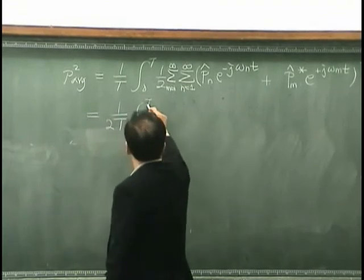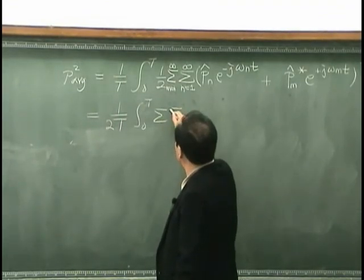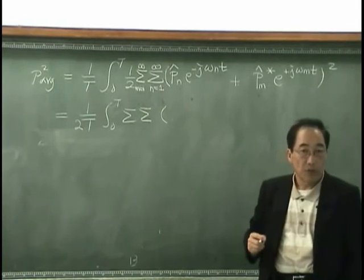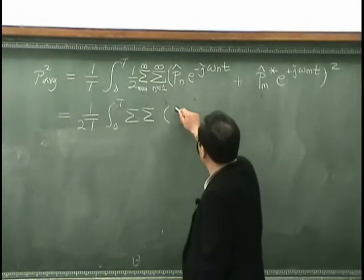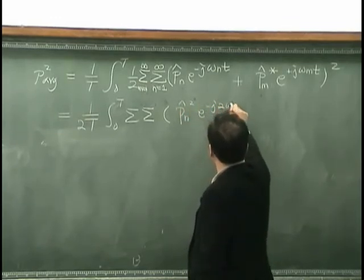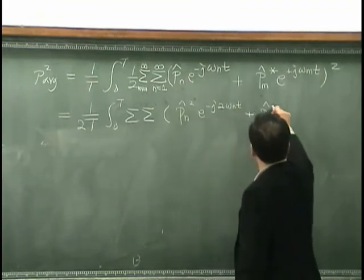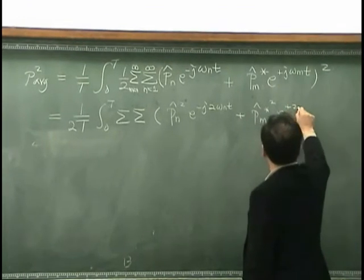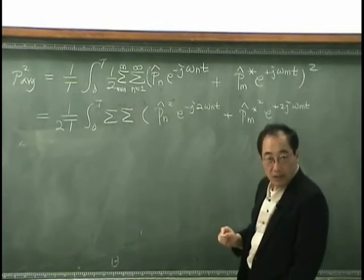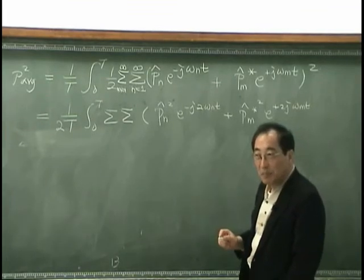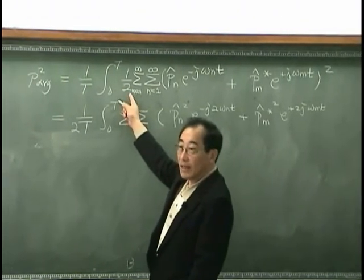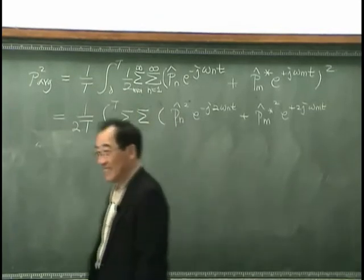Then, I have 0 to t, and two summing notation, and the last square is, then what I will have? I have pn hat square, exponential minus j2 omega nt, plus pn hat square, exponential plus 2j omega nt. Is it right? That should be 1 over 4. Yes.